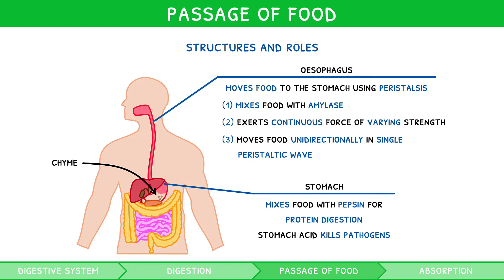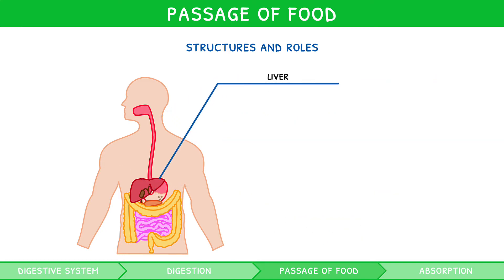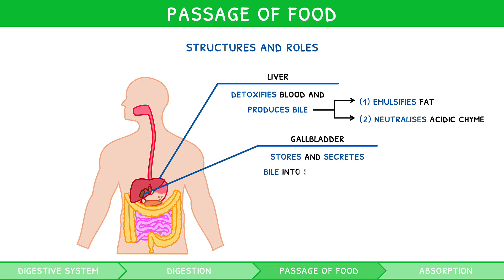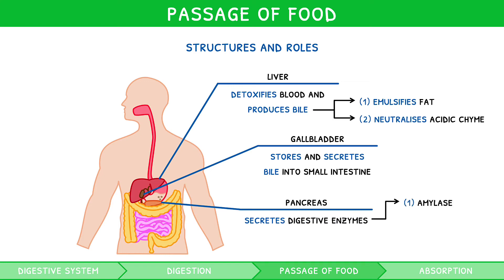At this stage in the digestive system, there are three structures to mention which play an important role but never come in direct contact with chyme. These are the liver, the gallbladder, and the pancreas. The liver detoxifies blood and produces bile. Bile is an alkaline substance which emulsifies fat, i.e. breaks it down into smaller droplets so that lipases can work more efficiently, and neutralizes acidic chyme to provide an optimum pH for digestion. The gallbladder stores and secretes bile into the small intestine, and the pancreas secretes digestive enzymes such as amylase and various lipases and proteases into the small intestine.